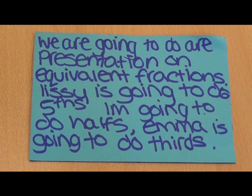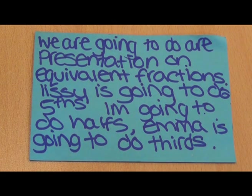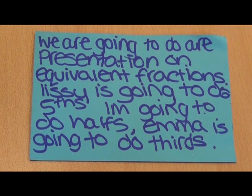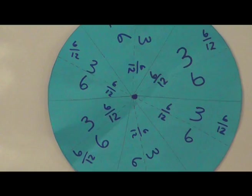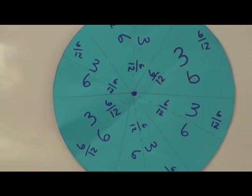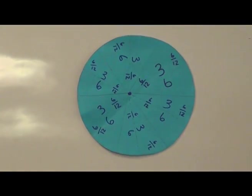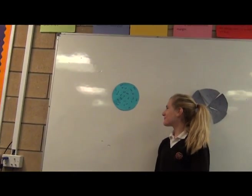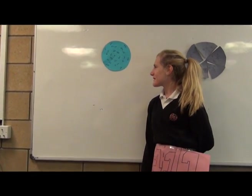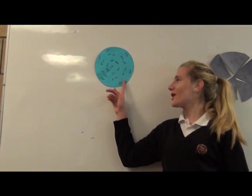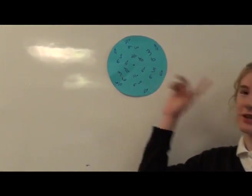We are going to do our presentation on equivalent fractions. Lucy is going to do fifths. I'm going to do halves and Emma is going to do thirds. This is 3 sixths. It's the same as 2 sixths equaling 12 twelfths. So it's just like showing it's the same.